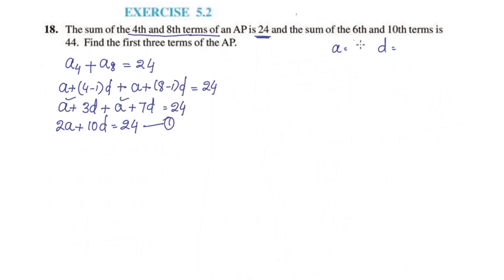Now, the sum of the 6th and 10th term is 44. So a6 plus a10 is equal to 44.